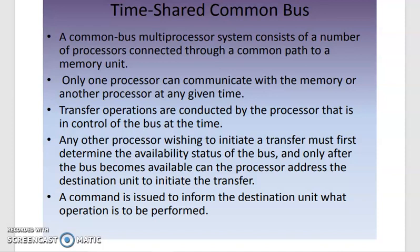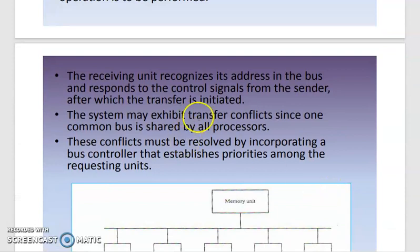A processor checks whether the bus is currently free or already engaged. If the bus is free, it is now available to use. The receiving unit recognizes its address on the bus and responds to the control signal, after which the transfer is initiated.